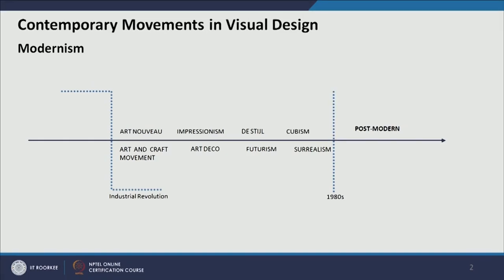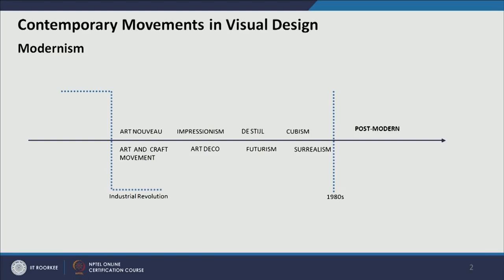Looking at the timeline of the modern era: we discussed Art Nouveau, Arts and Crafts, Art Deco, and impressionism — though impressionism is more of an art movement, so you can look at Van Gogh's and Edward Munch's artworks for reference. We discussed De Stijl and Bauhaus, and today we will cover futurism and cubism before moving towards postmodern and digital media styles.